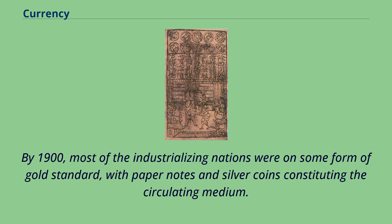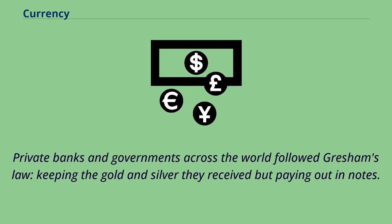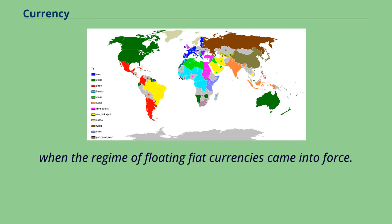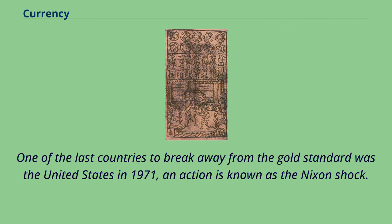By 1900, most of the industrializing nations were on some form of gold standard, with paper notes and silver coins constituting the circulating medium. Private banks and governments across the world followed Gresham's Law, keeping the gold and silver they received but paying out in notes. This occurred sporadically, generally in times of war or financial crisis, beginning in the early 20th century and continuing until the late 20th century, when the regime of floating fiat currencies came into force. One of the last countries to break away from the gold standard was the United States in 1971, an action known as the Nixon Shock.